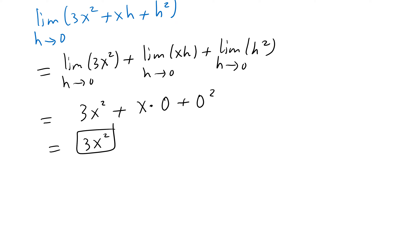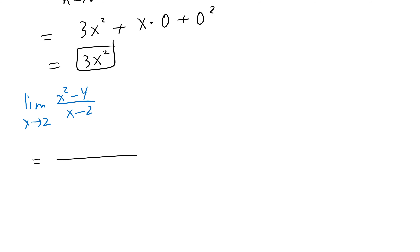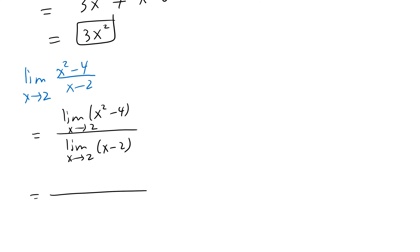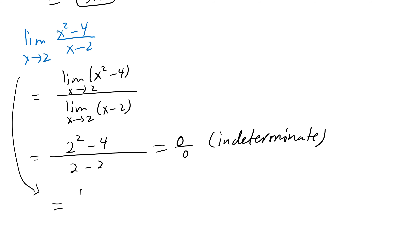Sometimes we try to find the limit of an expression such as (x² − 4)/(x − 2) as x approaches 2. If you pass the limit directly, you get 2² − 4 over 2 − 2, which is 0 over 0 — that's called indeterminate form. We cannot determine the value in this form, so we need to find a trick. One way is to use factoring.